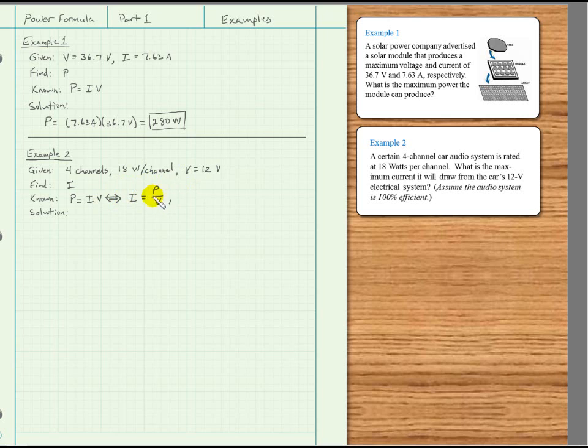We know V is 12 volts. I is what we want to solve for. So we'll need the total power P, and we can see that if we take the number of channels and multiply it by the watts per channel, we will get the total power. So 4 channels times 18 watts per channel.